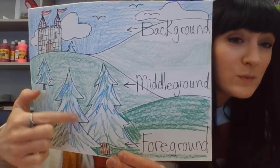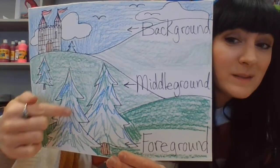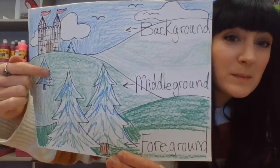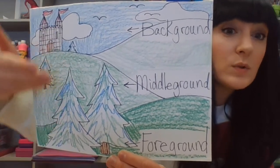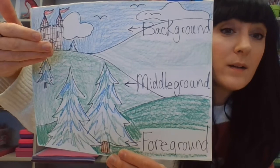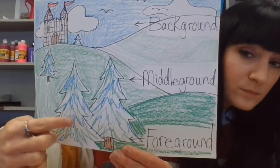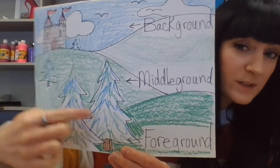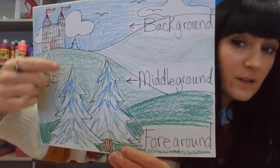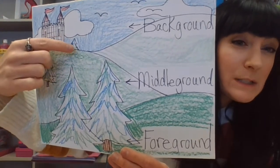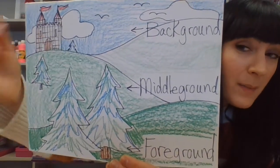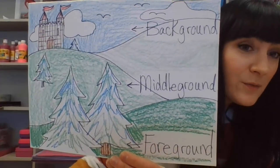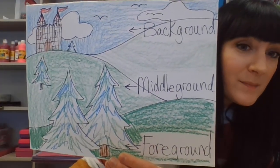Something else we can do is make things smaller as they go towards the background. These trees are larger; this tree is the smallest — it's far away by this castle.